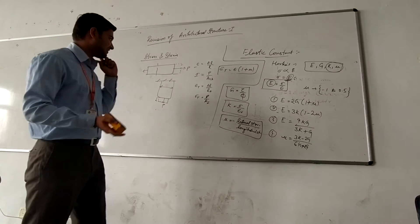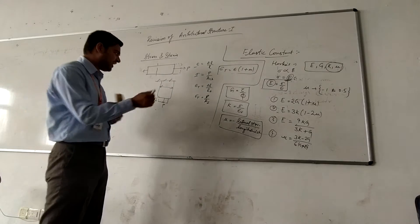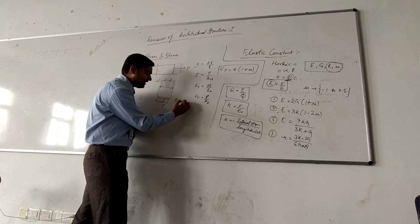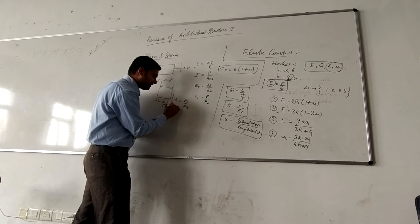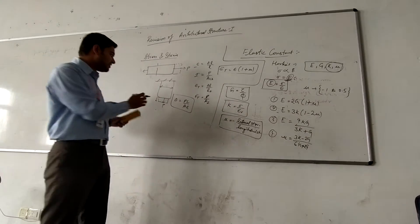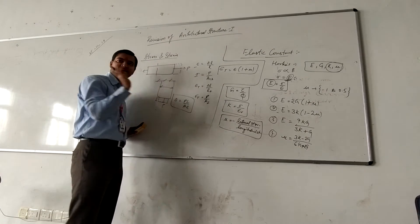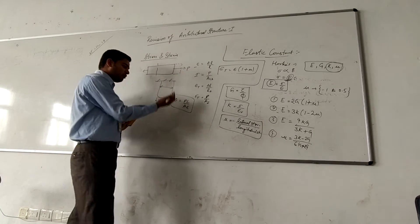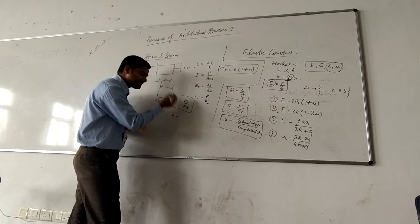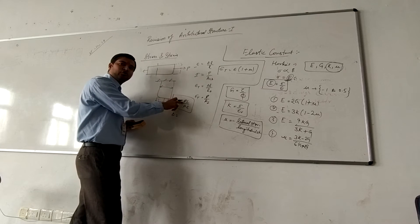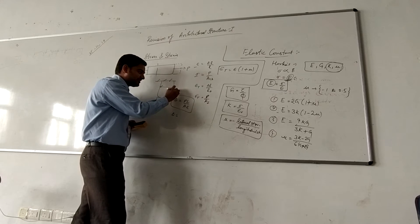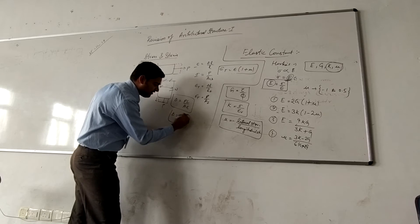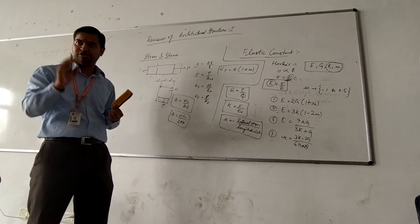Now there is one more thing — the elongation formula. Delta = PL / AE. This depends on the load P acting on your body. If there is self-weight of the member as well, the formula becomes delta = WL / (2AE). This is the change you will have when there is self-weight. You have also solved numerical problems on this.